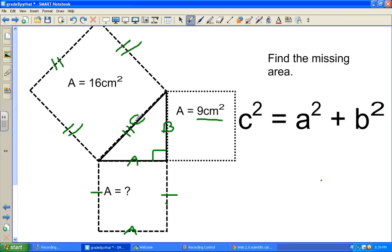So this is C, but we don't know C, we know C squared, because we know one side times another side is 16 centimeters squared. So I'm going to put 16 centimeters squared underneath the C squared part.